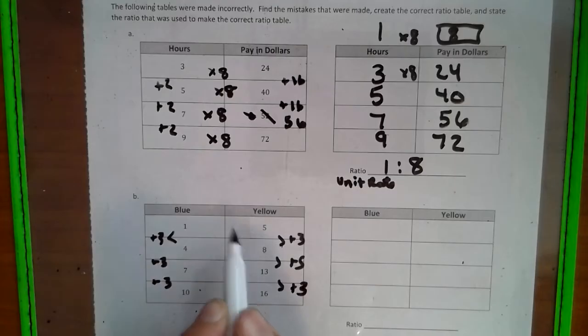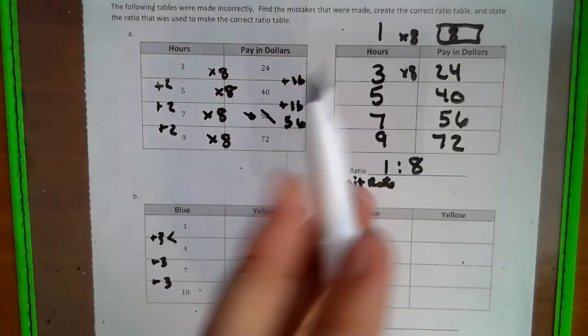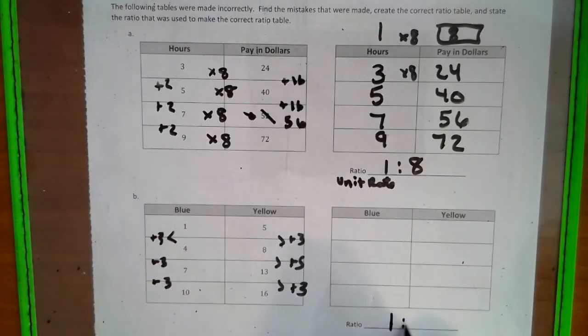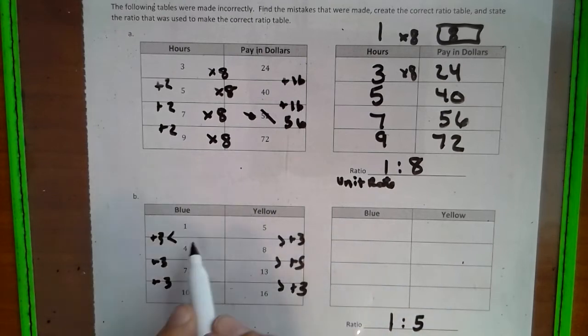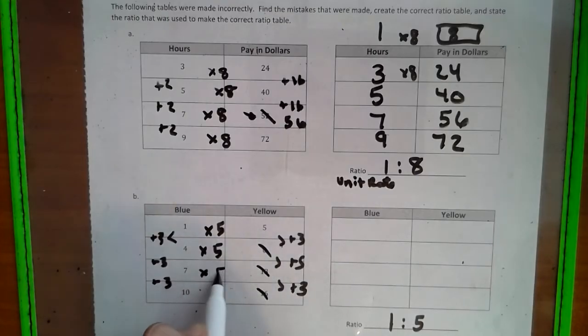What we notice, we have the 1 to 5 ratio, which is what we had to make here. So we already know that this is the correct pattern. For every 1, there's 5. So if there's 4, we go by 5. That means these are all incorrect. So this person who originally made this table, I don't know what's going on there.